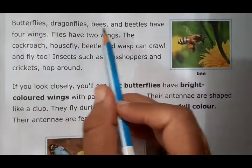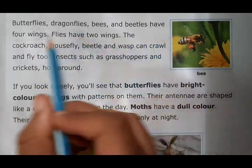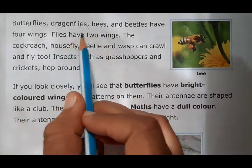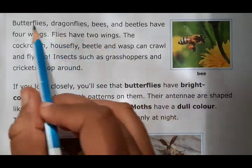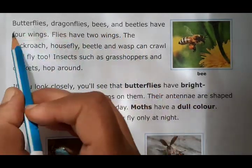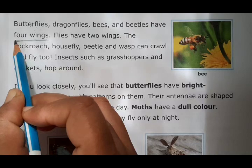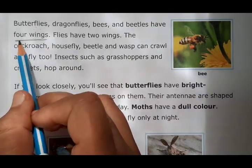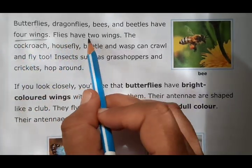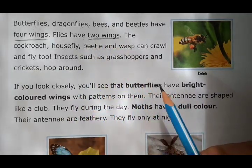Butterflies, dragonflies, bees and beetles have four wings. Flies have two wings. How many wings have butterflies and dragonflies? Four wings. And flies have only two wings.